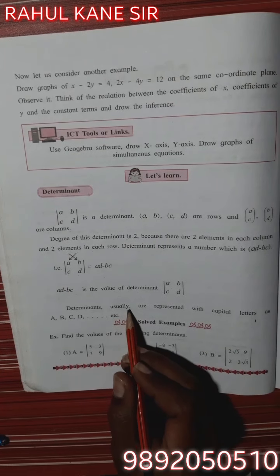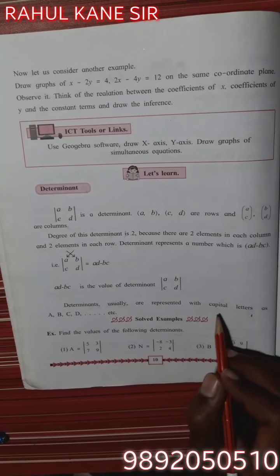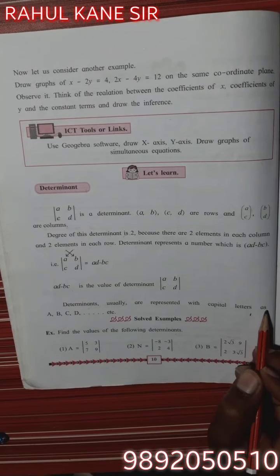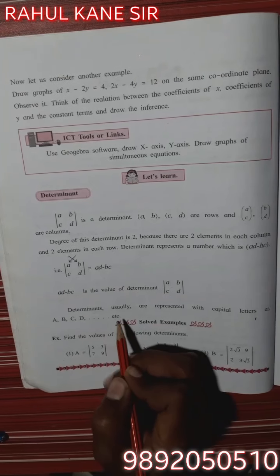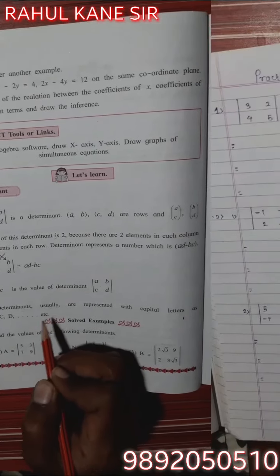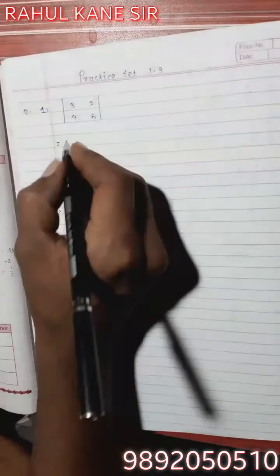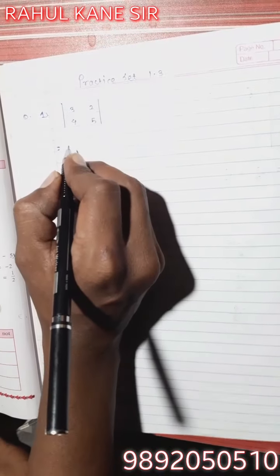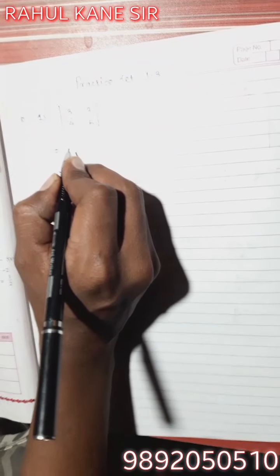Determinants are usually represented with capital letters as A, B, C, D, etc. See practice set number 1.3, question number 1. Fill in the blanks with the correct number.